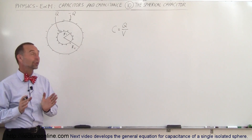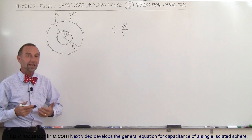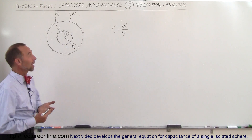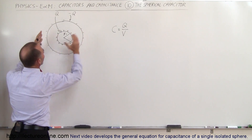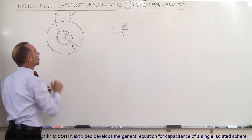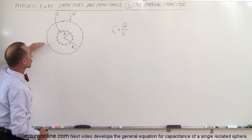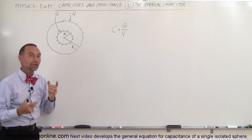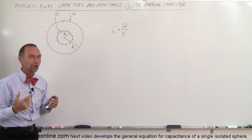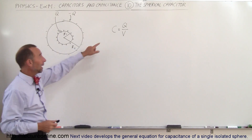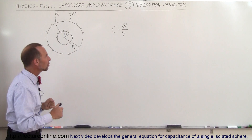Welcome to ElectronLine. Now we're going to determine the capacitance of a spherical capacitor. Here we have a capacitor drawn — a sphere on the inside and a sphere on the outside. They have the same center. There is a charge Q on the inner sphere and a charge minus Q on the outer sphere. The radius of the inner sphere is R1, the radius of the outer sphere is R2. By definition, the capacitance is equal to the charge divided by the potential difference between the two spheres.